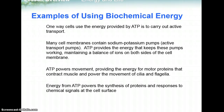Some examples of how biochemical energy is used: one way cells use the energy provided in ATP is to carry out active transport. Many cells contain sodium-potassium pumps, which are active transport pumps, meaning that you need energy in order for that diffusion to happen. ATP provides the energy that keeps these pumps working, maintaining a balance of ions of sodium and potassium on both sides of the cell membrane. ATP also powers movement, providing energy from motor proteins that contract muscle and power the movement of cilia and flagella — whip-like structures that help the cell move. Energy from ATP also powers the synthesis of proteins and responses to chemical signals at the cell surface.